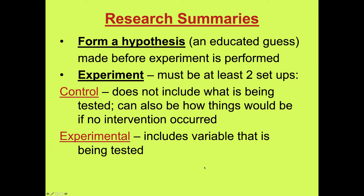There are almost always two groups: a control group and an experimental group. The control group does not include whatever is being tested — it represents how things would be if the intervention did not take place. The experimental group is the one where the variable being tested is actually changed or modified.